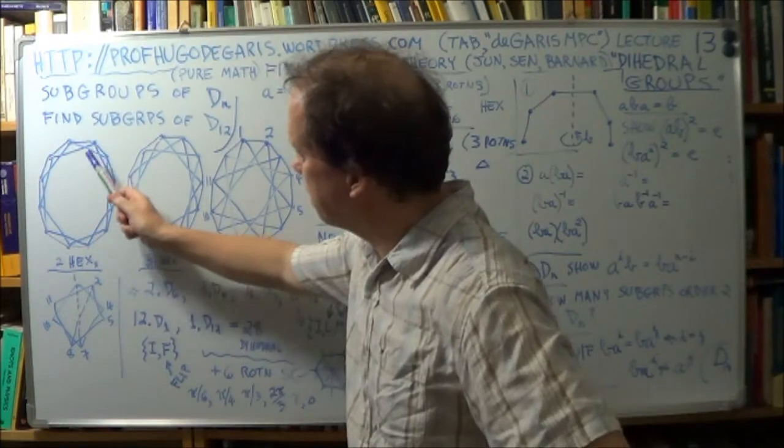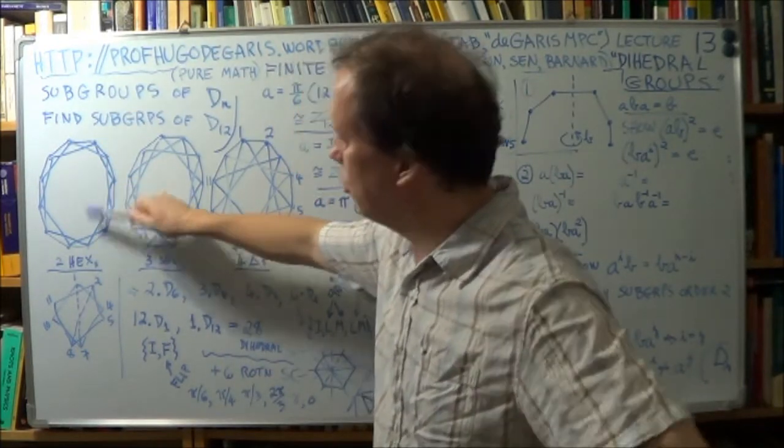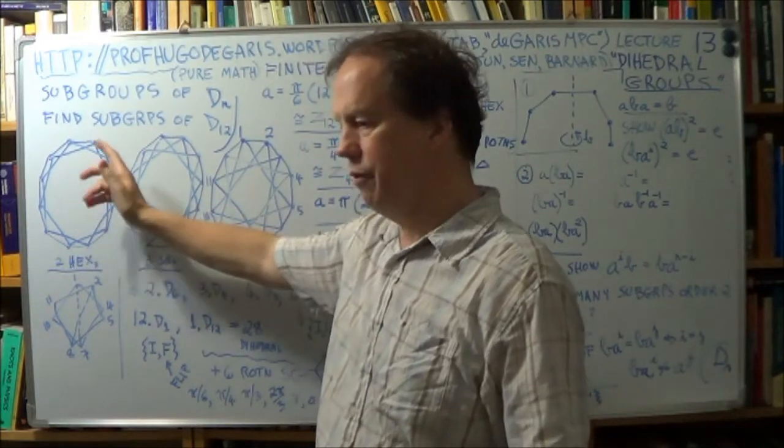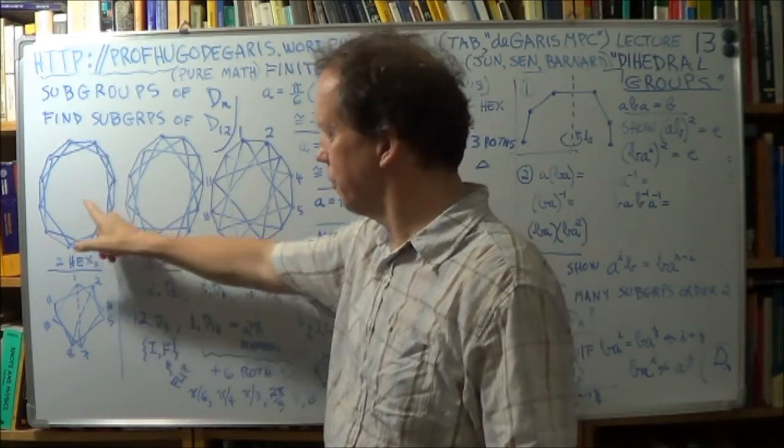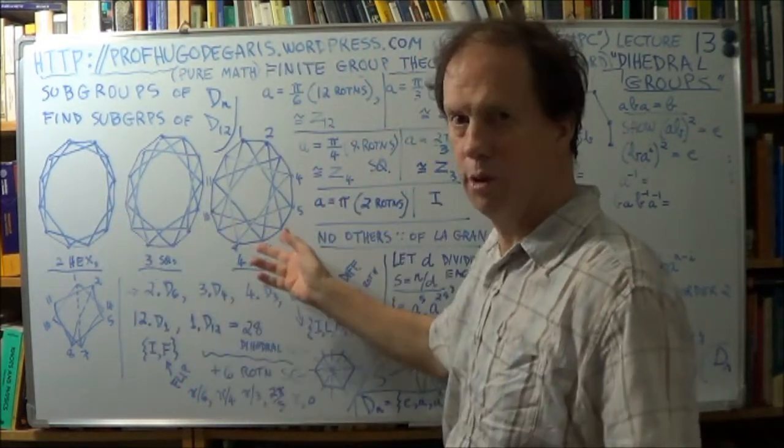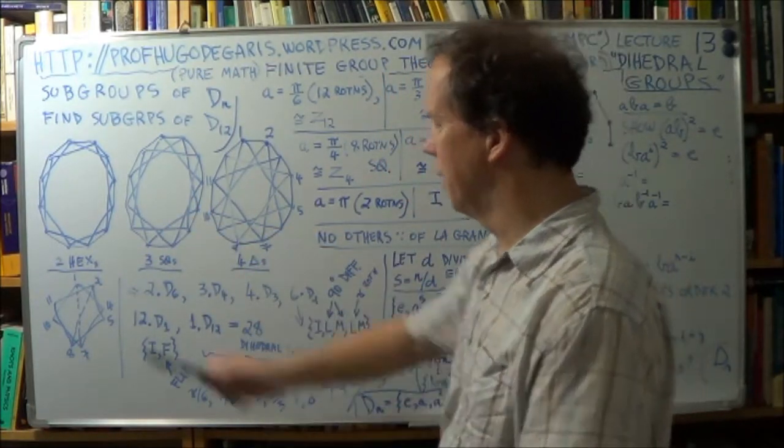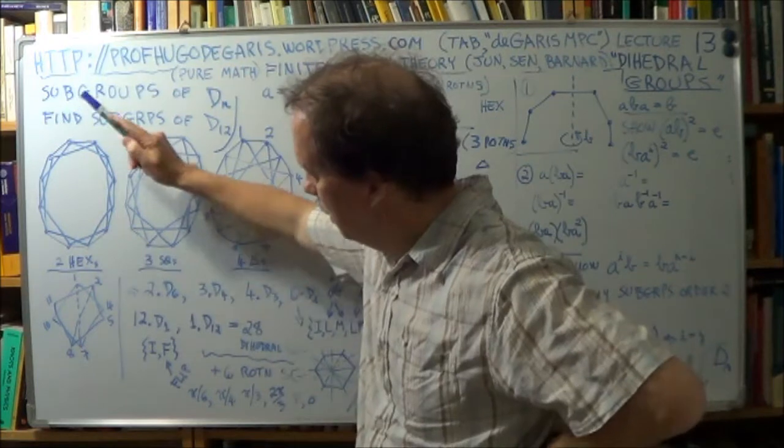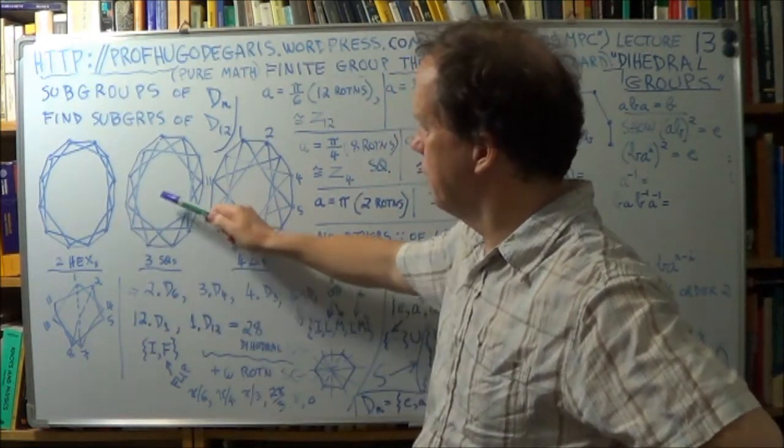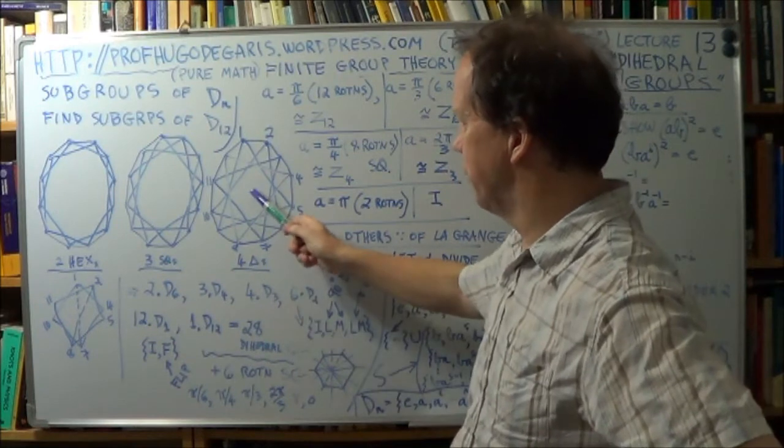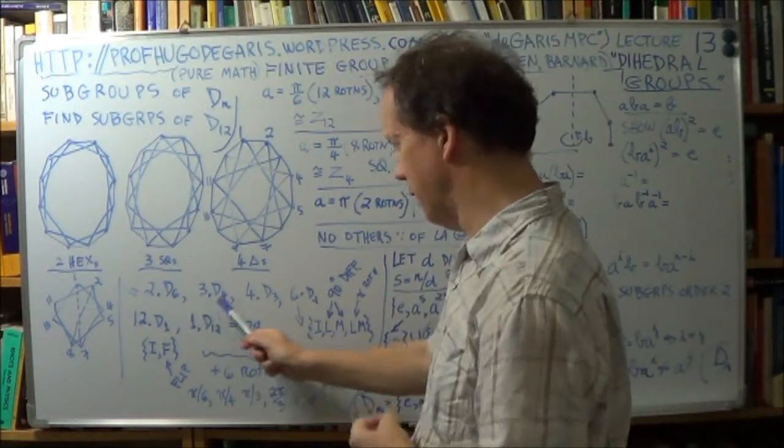Right? So, each of these, like here, all the flipping operations for one of your hexagons will have a different effect if you do it for the other hexagon. And similar logic for your squares. So, you'll have two subgroups for your hexagon. You'll have three subgroups for your square. And you'll have four subgroups for your triangle. So, it's sort of summarized here.